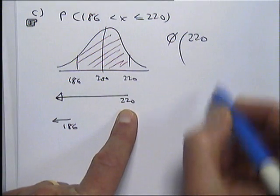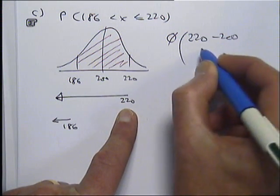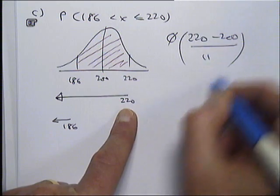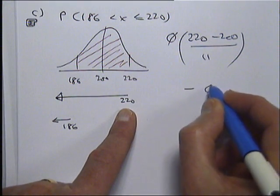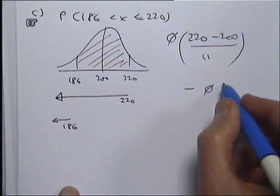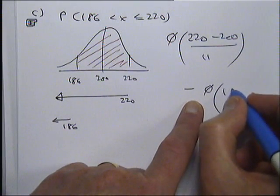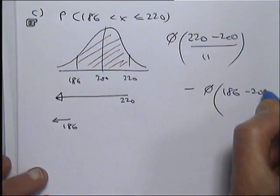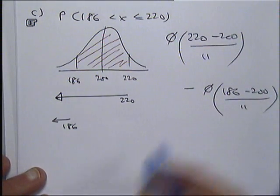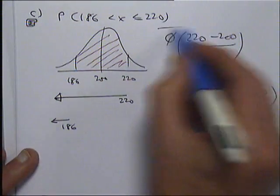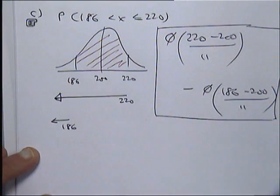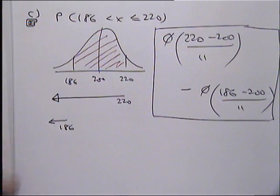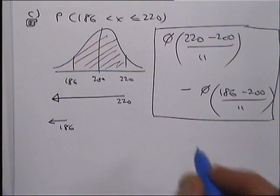That's my X. And I take away mu, and I divide by sigma. And from that, I've got to take away the area to the left of 186, which is phi of X minus mu over sigma. So in this box over here is the sum you're doing. Inside the brackets, you've basically changed the X's into Z's.